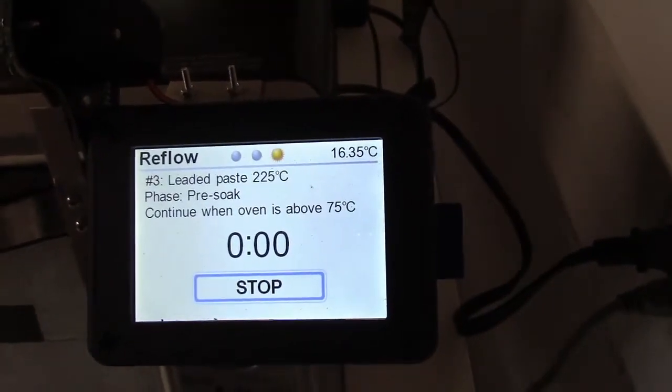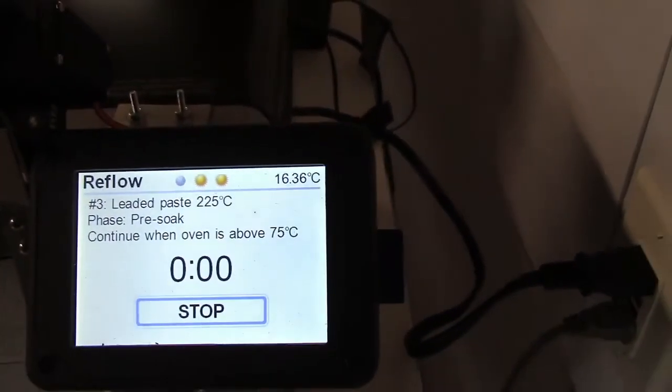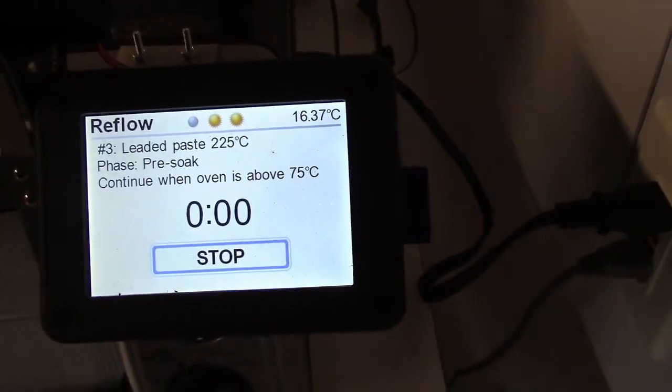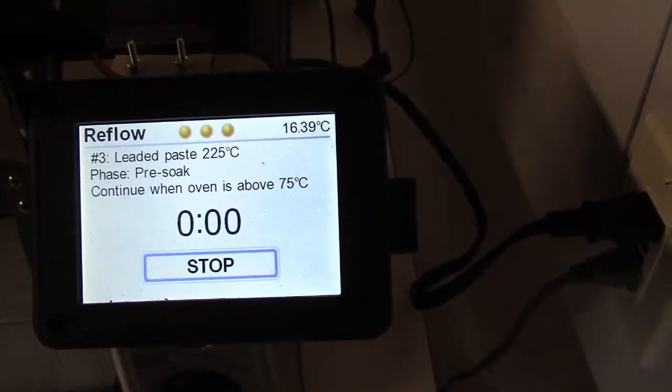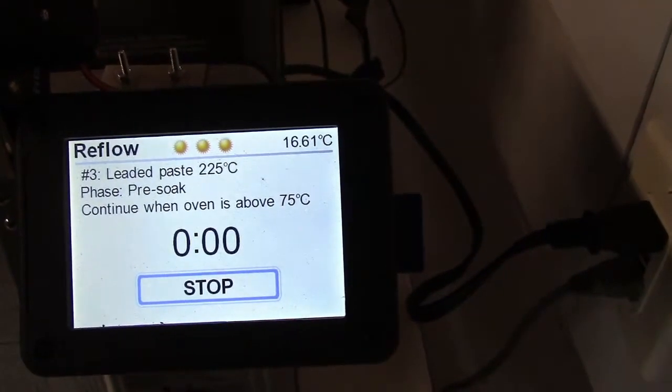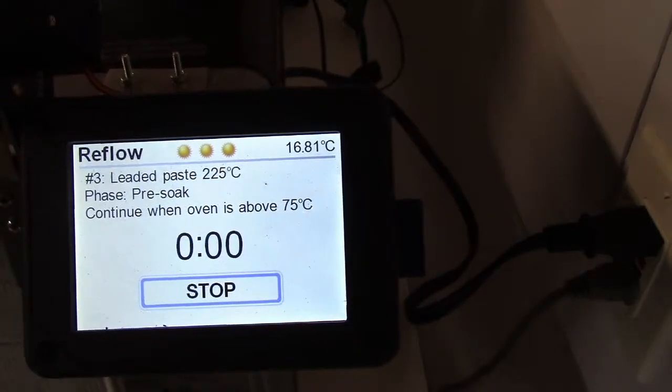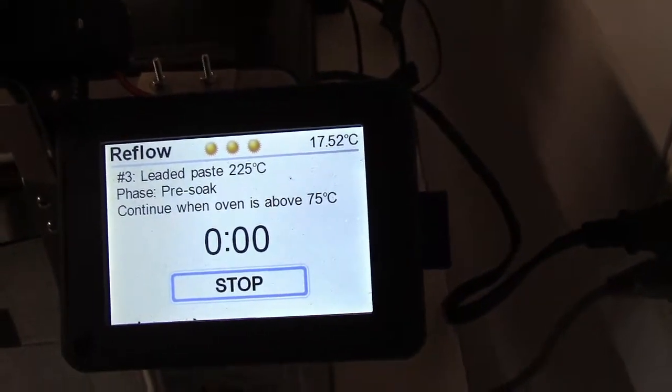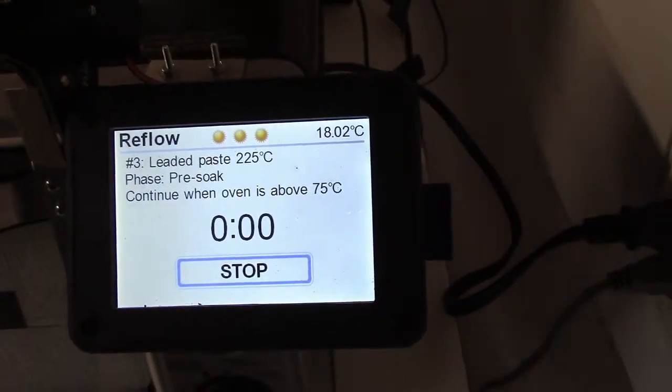So all I do is start. And right now it's going to do pre-soak. Continue when the oven is above 75 degrees. So essentially it's turned on. And up in the upper right you can see the temperature's going up. So this part's pretty boring. I'm probably just gonna stop and then we'll come back when the reflow is getting close or totally done.